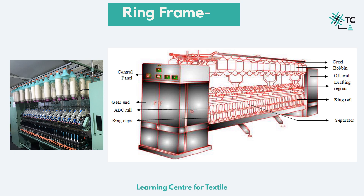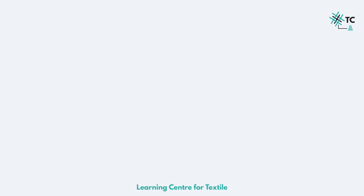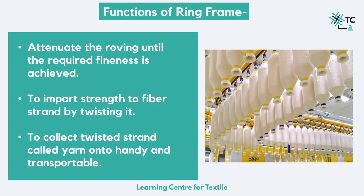We will discuss about the ring frame from top to the bottom and discuss all the components. But before that, let us know why ring spinning — what is the task of ring spinning? Number one, to draft the roving for the conversion of a very fine strand of fibers to form a yarn of required count; that is, in technical terms, we attenuate the roving until the required fineness is achieved. This is all done in the drafting zone. Secondly, to impart strength to the yarn by inserting the necessary amount of twist. And last, to collect the twisted strand called yarn onto a handy and transportable bobbin. So this is the task of ring spinning.